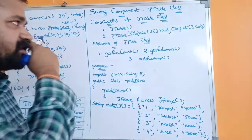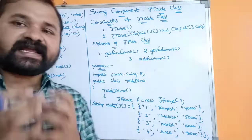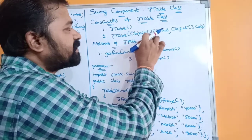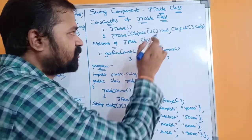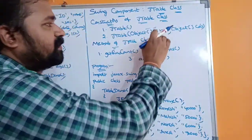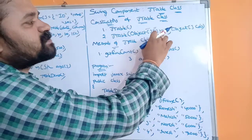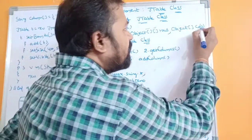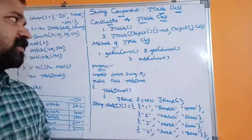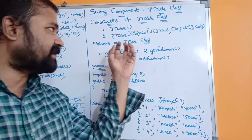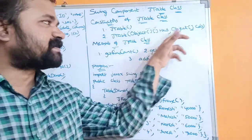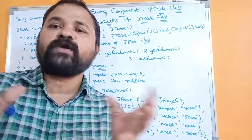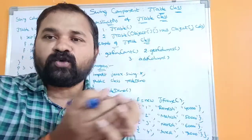The first constructor, JTable(), creates an empty table. The second constructor, JTable(Object[][] rows, Object[] columns), accepts two dimensions for rows — rows are specified with the help of a two-dimensional array — and columns are specified with the help of a one-dimensional array. It will create a table with the specified rows and columns data.